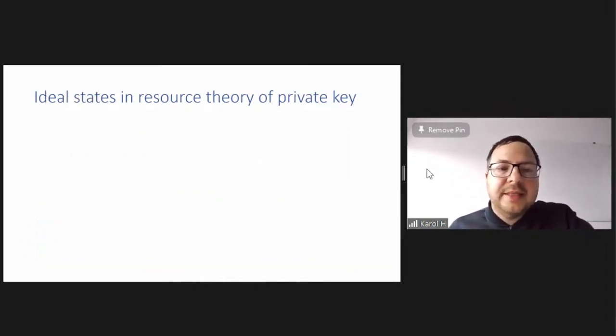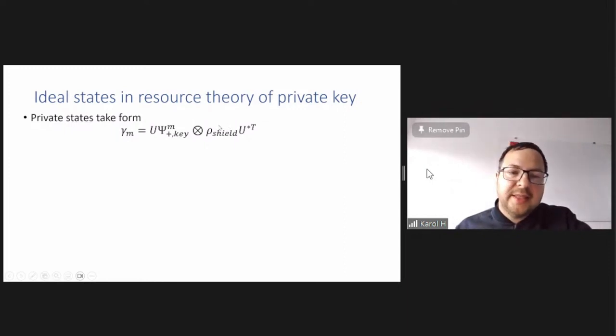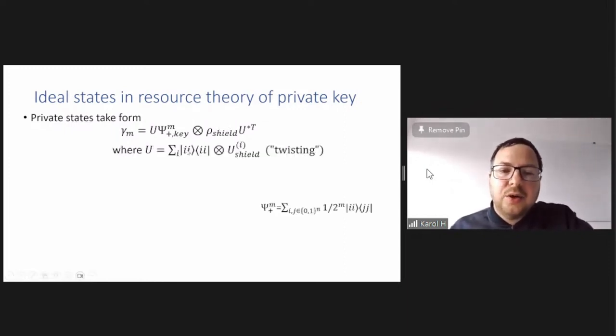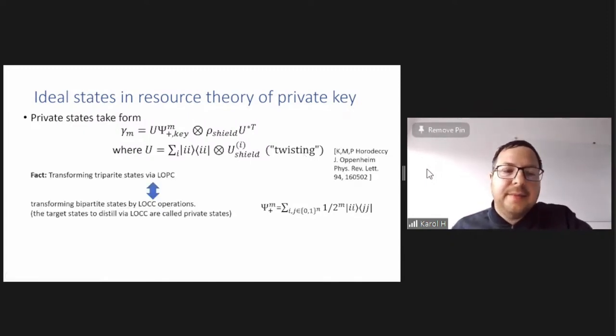So now a little bit comment about ideal states in resource theory of private key, because it's important. So private states take this form that you take this, again, singlet state, something which is on the so-called key part, then the arbitrary state on the shield part, which protects the key part. And then you rotate it by a control unitary transformation that has a control on the key and performs unitary transformations on the shield, which is called twisting. And like I said, there is this equivalence that you can either transform this tripartite state, the purified, total pure state by LOPC, or equivalently, you can transform bipartite marginal of it, that of Alice and Bob, by means of LOCC operations. So the target state in distilling key are then private states.